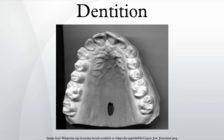All mammals except the monotremes, the xenarthrans, the pangolins, and the cetaceans have up to four distinct types of teeth, with a maximum number for each. These are the incisor, the canine, the premolar, and the molar.